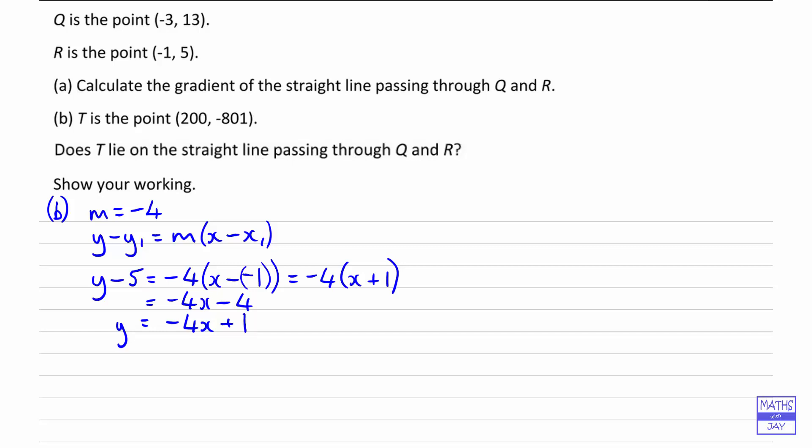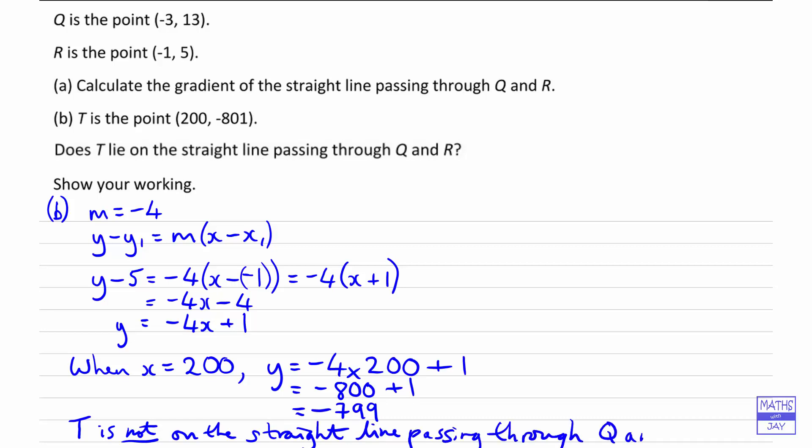Right, so now we want to know if T lies on this line. So T has got an x coordinate of 200. So what we're going to do is have a look at what happens when x equals 200. If y equals minus 801, then we know that T does lie on the line; if not, it doesn't. So when x is 200, y is equal to minus 4 times 200 plus 1, so that's minus 800 plus 1, so that's minus 799. So it's not minus 801, so T does not lie on that straight line. So T is not on the straight line connecting Q and R. So that's one way of working out whether or not T lies on that straight line. Have you thought of another way that you could have done that instead of the method I've used?